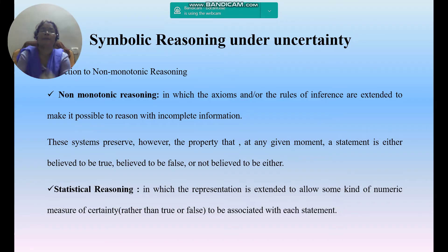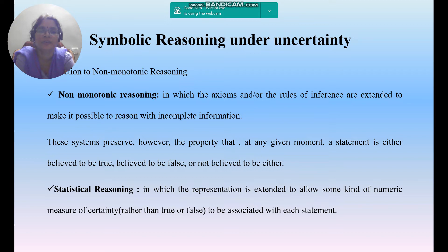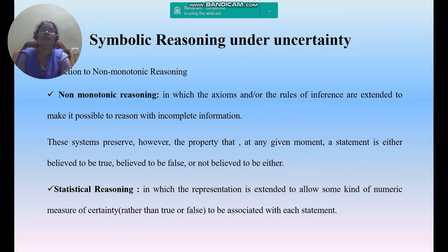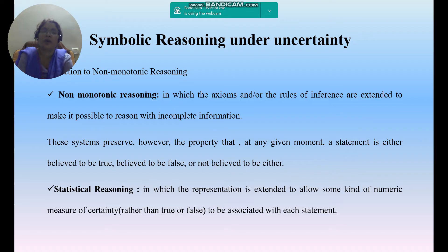Next, what is non-monotonic reasoning and why is it used? Non-monotonic reasoning is where the axioms and rules are extended to make it possible to reason with incomplete information. Whatever incomplete, inadequate, and inconsistent information we have — based on that information only, we conclude the rules and inferences. That is called non-monotonic reasoning.